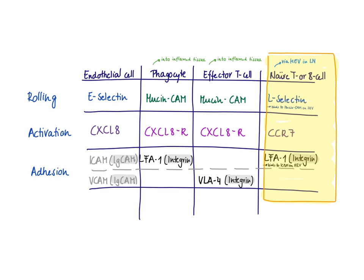They also use different chemokines: the naive T or B cell has a CCR7 receptor, which reacts with its ligand. Then for the adhesion process — the tight interaction — we have the exact same mechanism as discussed for the neutrophil. It's LFA-1 on the naive T or B cell interacting with ICAM on the high endothelial venule. This is how the naive T or B cell can travel from lymph node to lymph node to find the antigen that would activate and clonally expand them.